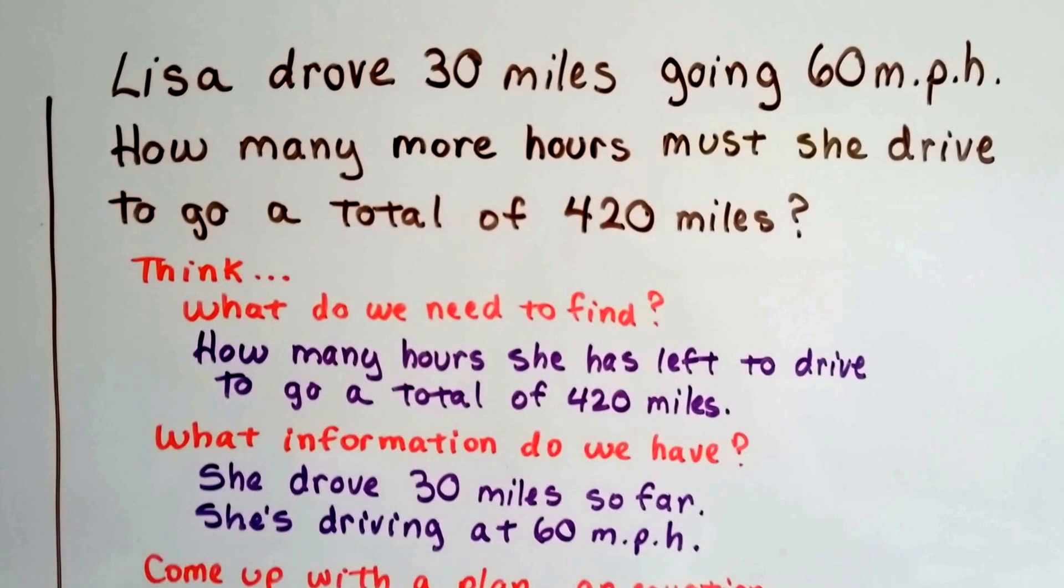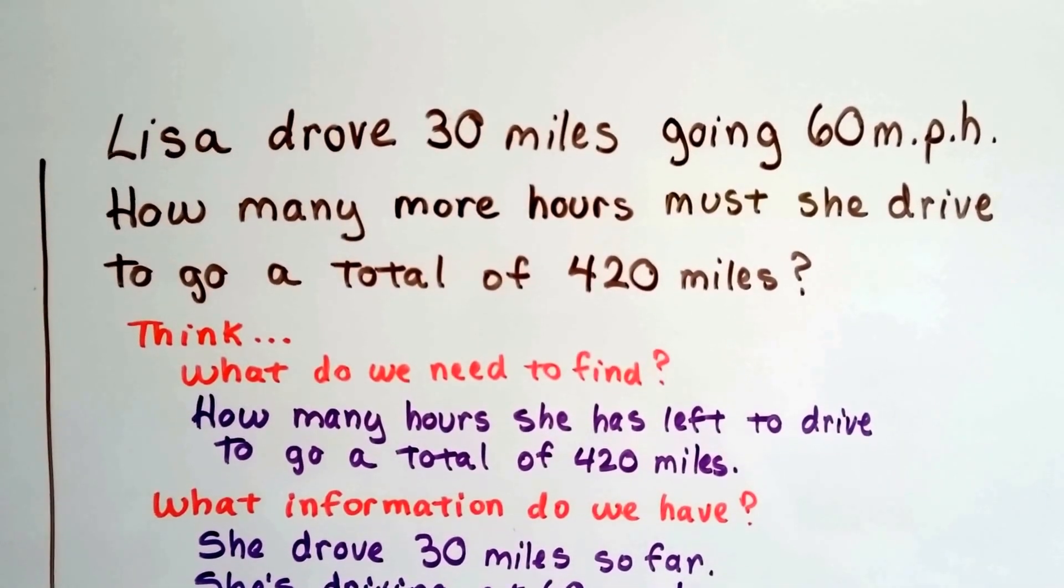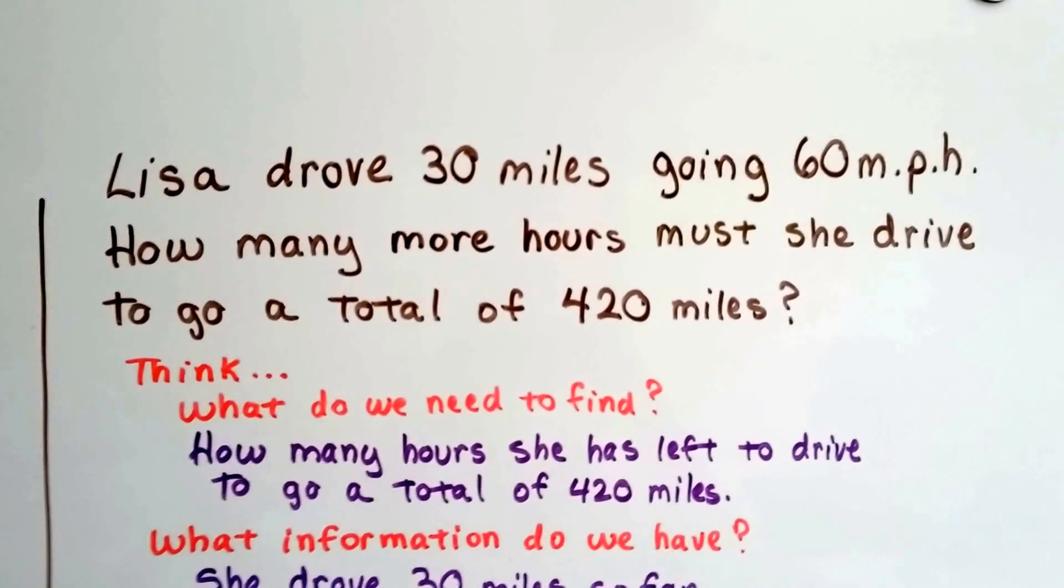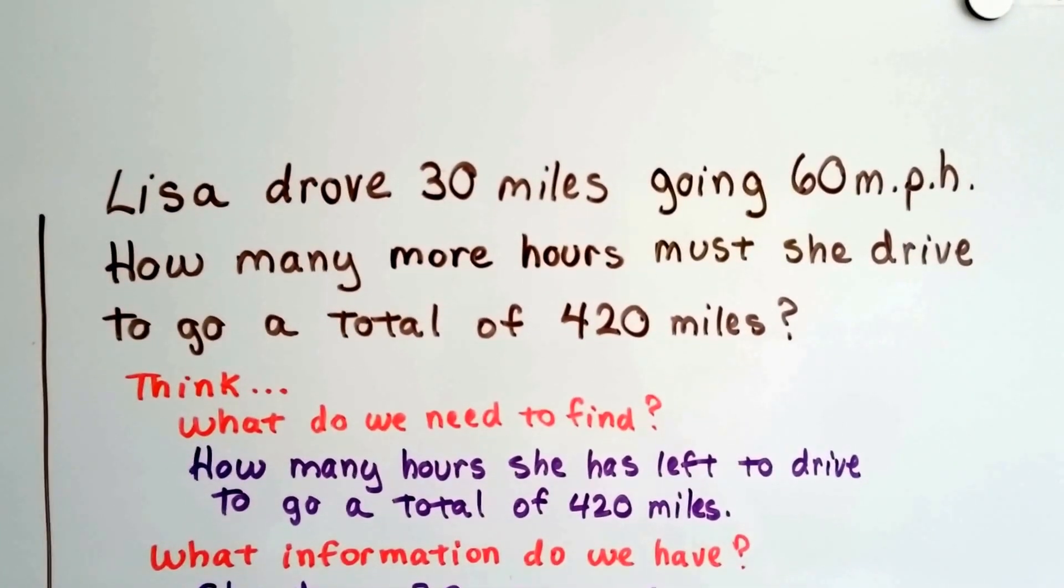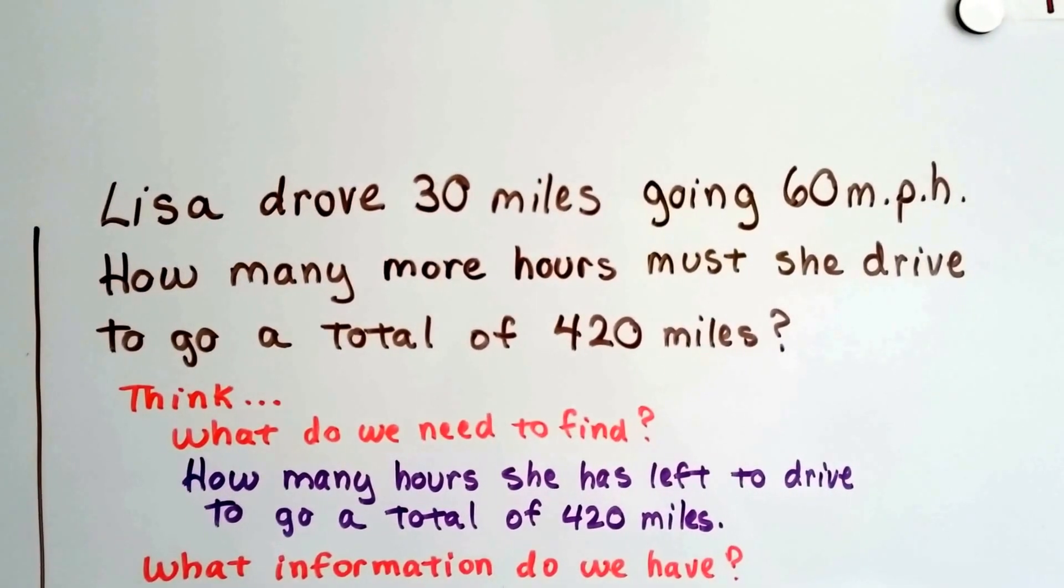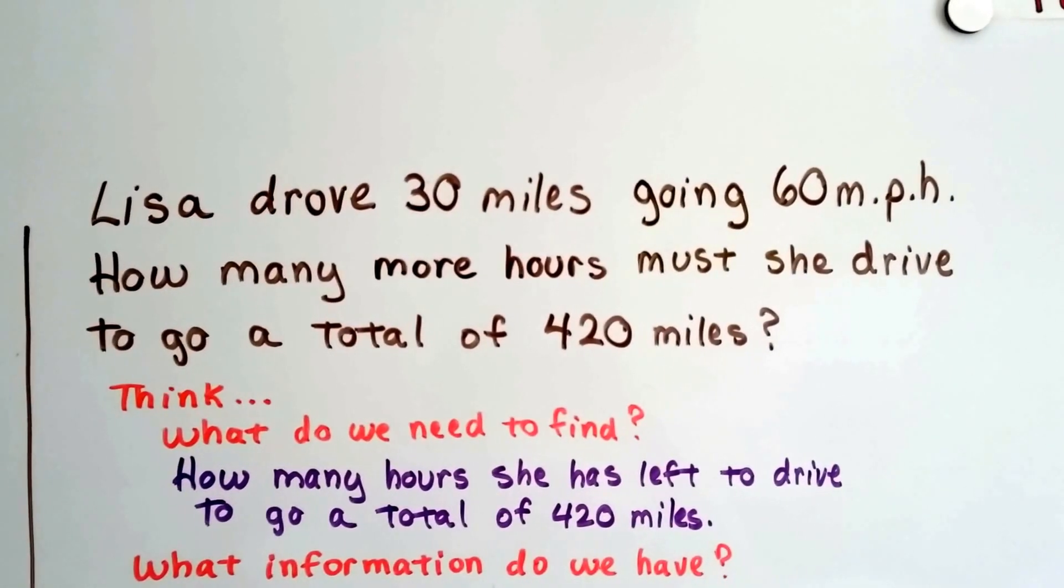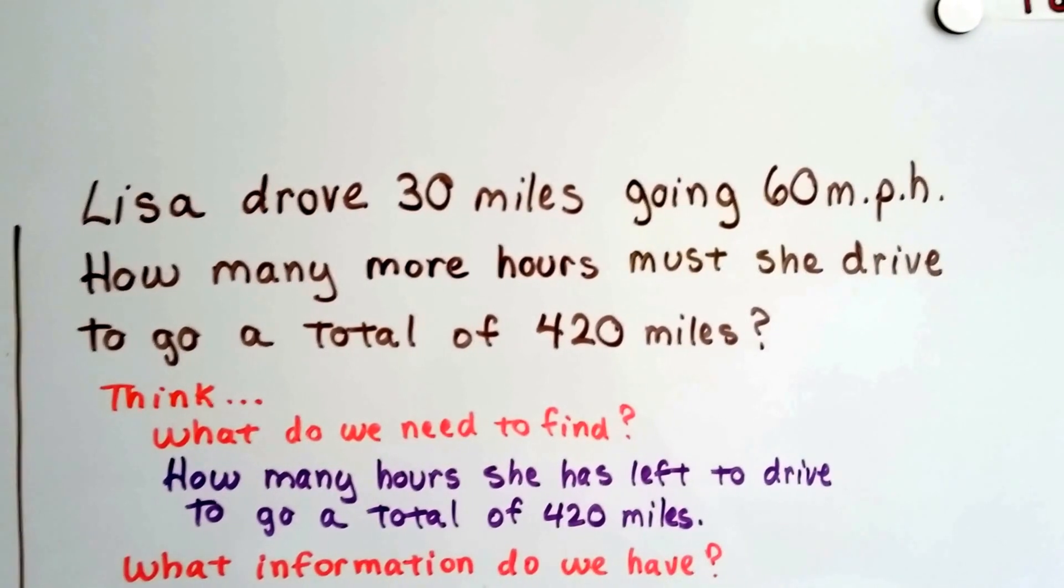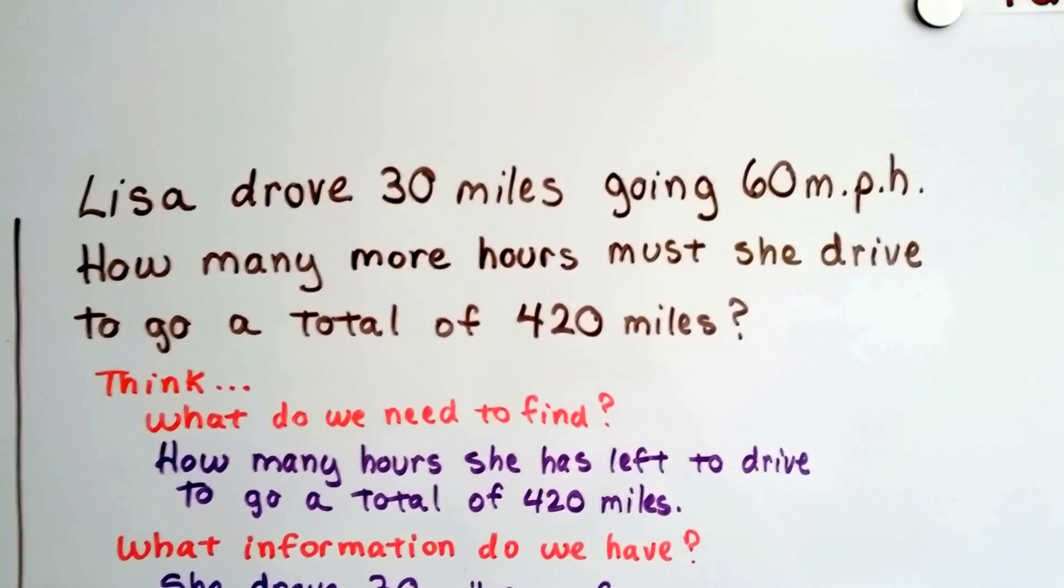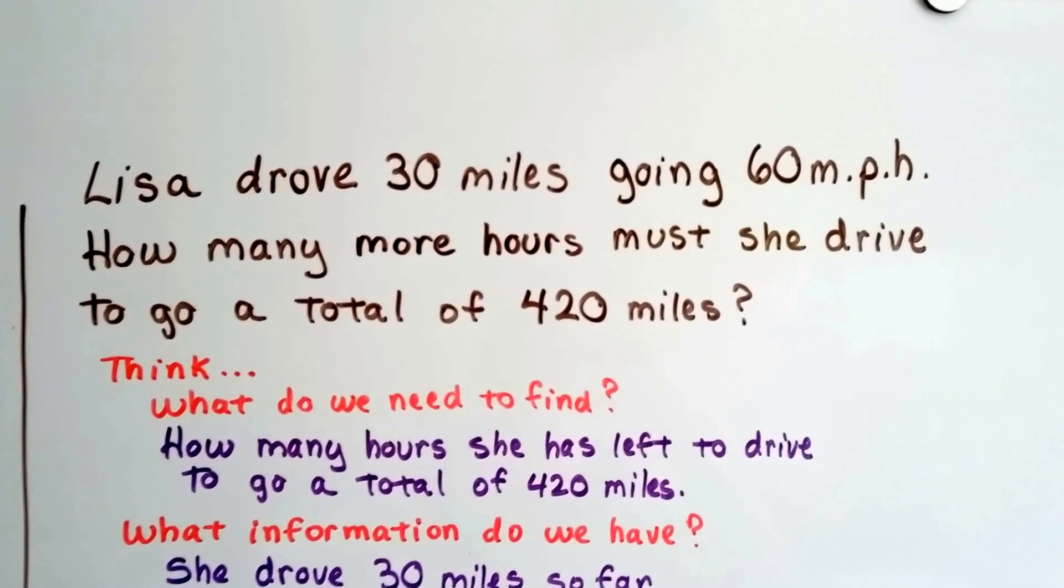Lisa drove 30 miles going 60 miles an hour. So don't let this confuse you. She was going 60 miles an hour, but so far she's only gone 30 miles. So how many more hours must she drive to go a total of 420 miles? Her speed is 60 miles an hour, but so far she's only covered 30 miles of that.